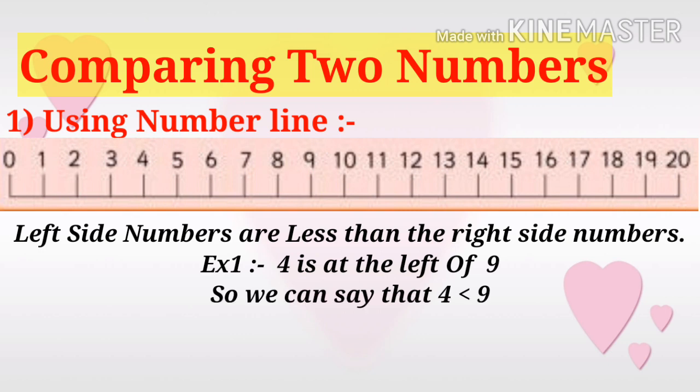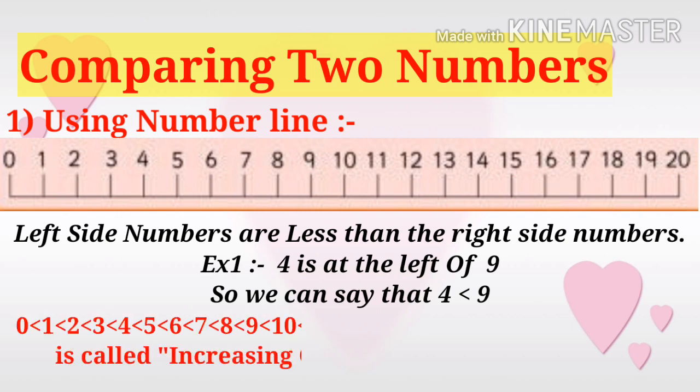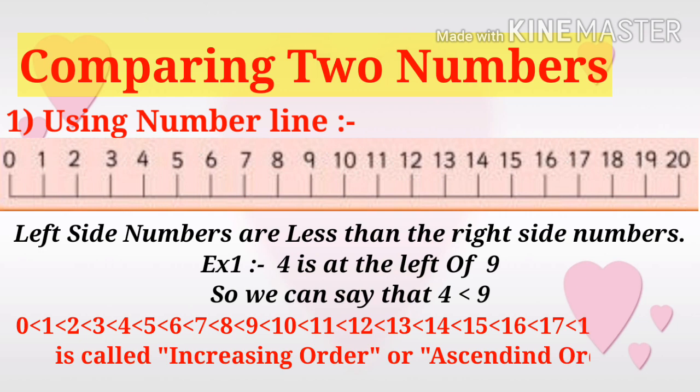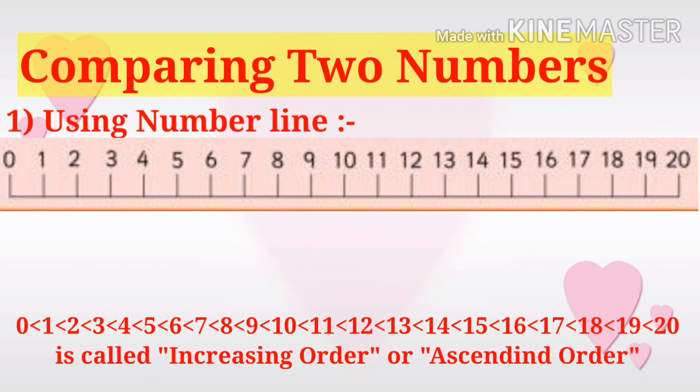4 is at the left of 9, so we can say that 4 is less than 9. By generalization, we can say that 0 is less than 1, which is less than 2, is less than 3, is less than 4, and so on.